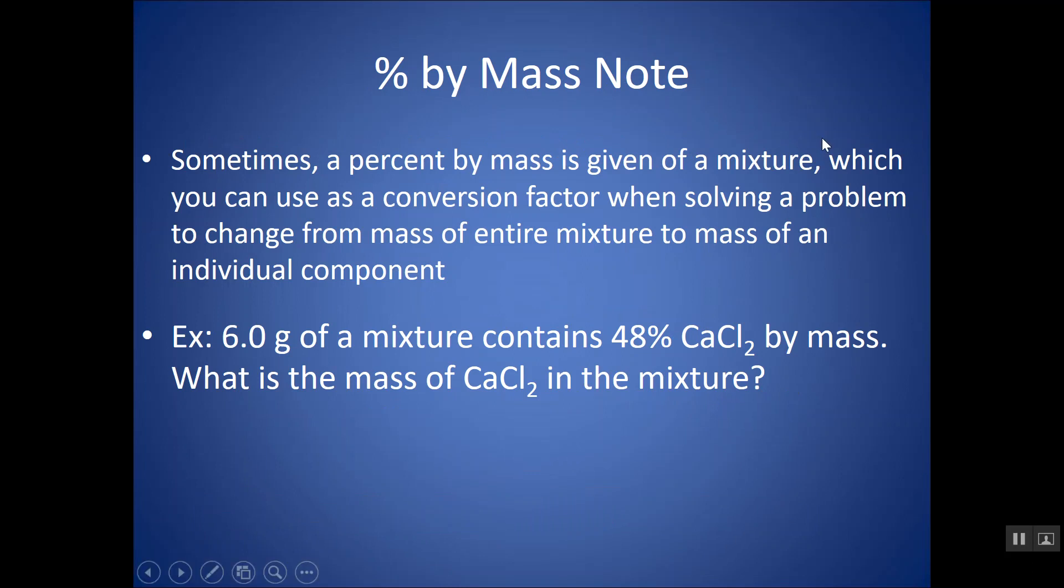Sometimes a percent by mass is given of a mixture. And again, you can use this percent by mass as a conversion factor when solving a problem to change from mass of the entire mixture to mass of an individual component. So, take a moment and look at this problem. Six grams of a mixture contains 48% of CaCl2 by mass. What is the mass of CaCl2 in the mixture? A lot of the times this might be part of a bigger problem. They give you the percent by mass of a certain compound. They give you the mass of the whole mixture, but they don't give you the mass of CaCl2, which you might need later on to do stoichiometry with, let's say.